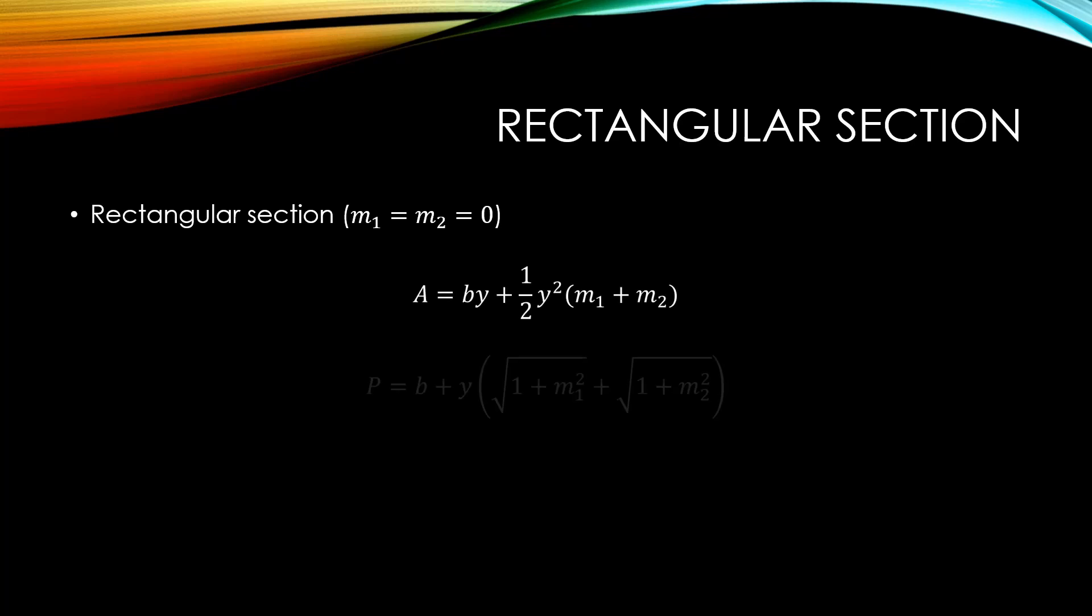So, if we start with the equation for the area and the wetted perimeter of a trapezoid, and we set the side slopes to zero, we can cancel out that part of the equation and get an area of base times depth.